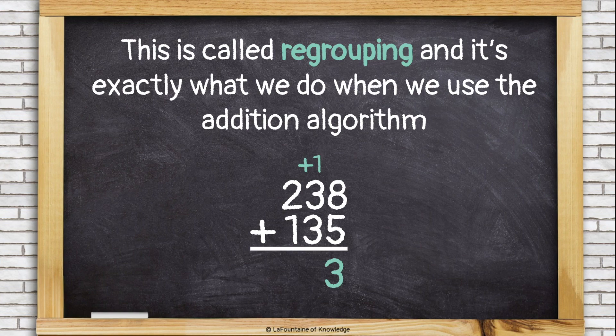So I put down the 3 ones, and I carry a group of 10 over to be with the other tens in the tens place. Then I add all the tens together and the hundreds together. 373.